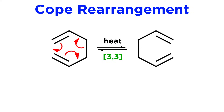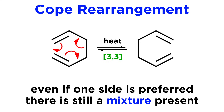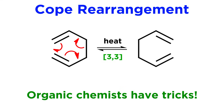These examples we have just examined can also be referred to as the Cope rearrangement. These usually require temperatures of around 200 degrees Celsius to proceed. One may question the synthetic utility of this technique, as even when an equilibrium prefers one form over another, there is still the disadvantage of low yield and the necessity of separating from starting material.